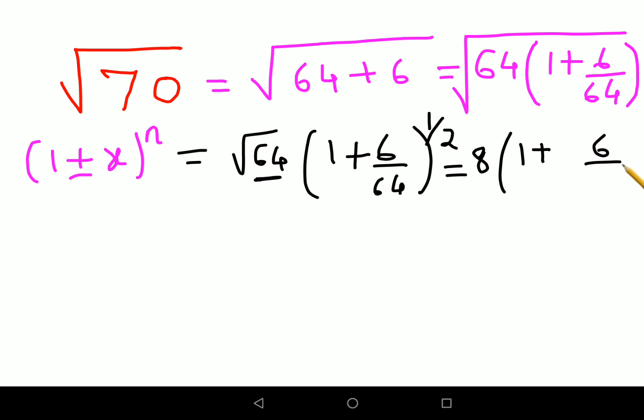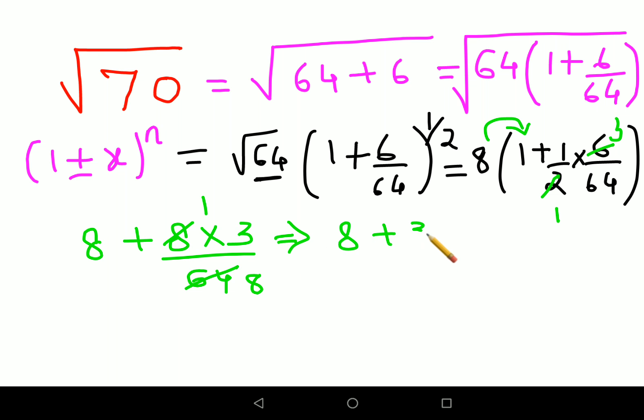Then what happens is root of 64 gets you just 8, and this will become 1 + 6/64, this will get multiplied by 1·1/2. Now if you look closely, things are getting cancelled—2s and 1s are, and 8s are. So let's do one thing, we'll put the 8 inside the bracket, so we'll get 8·1 gets you 8 plus 8·3/64. So what you're left with is 8 + 3/8.